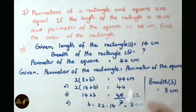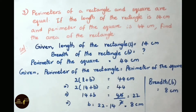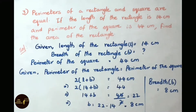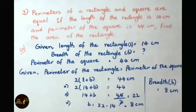We know perimeter of the rectangle formula: 2 into (L plus B) equals 44. Substituting length value 14 cm: 2 into (14 plus B) equals 44. So 14 plus B equals 44 divided by 2, which is 22. Therefore B equals 22 minus 14, giving breadth of the rectangle B equals 8 cm.